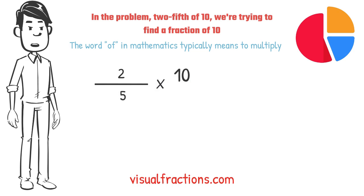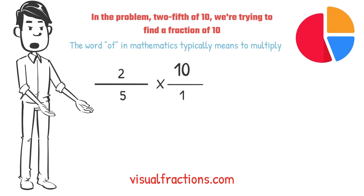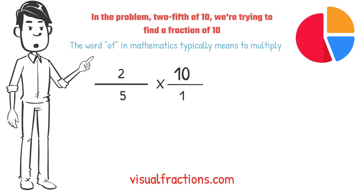To simplify the calculation, we first convert our whole number into fraction form, writing 10 as 10 over 1. This transformation makes it easier to work with our numbers as fractions.